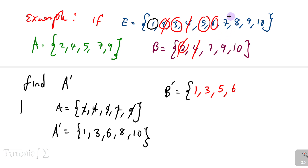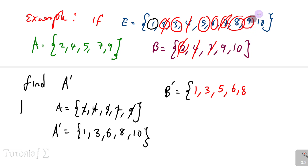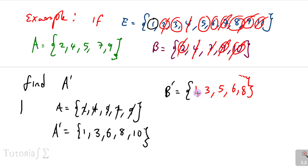Universal set has 7 — B has 7, skip. Universal set has 8 — B does not have 8, write 8. Universal set has 9 — B has 9, skip. Universal set has 10 — B has 10, skip. So B complement = {1, 3, 5, 6, 8} — terms not found in B but found in the universal set.